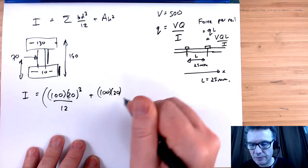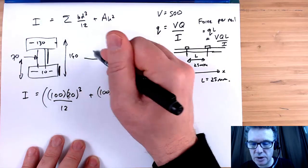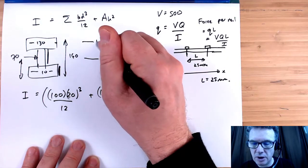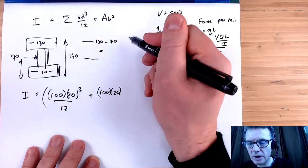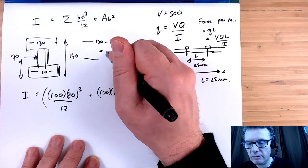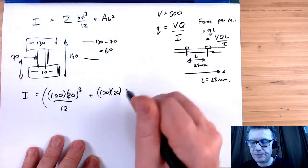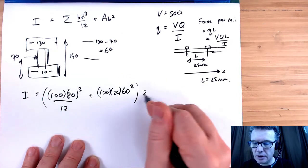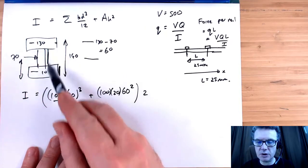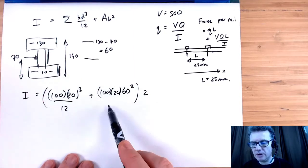We're going to times all of this by 2. And what about the area for the top? That's 100 times 20. And what about my H? My H is going to be 130 take away 70, and that leaves me with 60. So we've got 60 squared there.